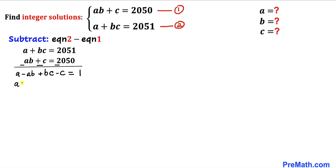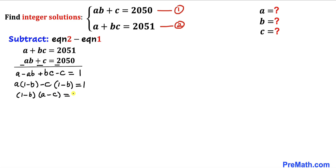So therefore we can write a times (1 − b), and here I'm going to factor out negative c, so we get negative c times (1 − b) equals 1. Now we can see (1 − b) is common, so I can factor out (1 − b) and get (1 − b)(a − c) = 1. Since 1 and −1 are integers, our possibilities are 1 × 1 and (−1) × (−1).